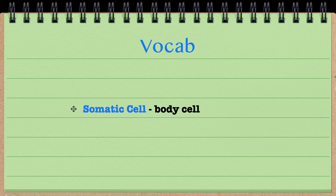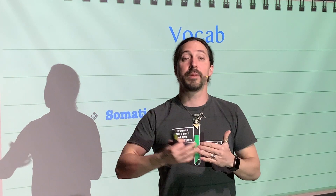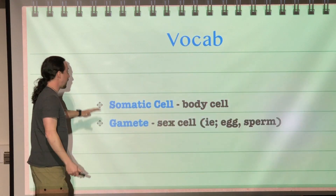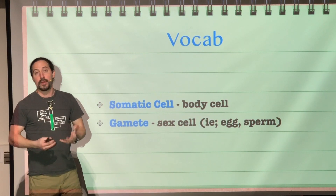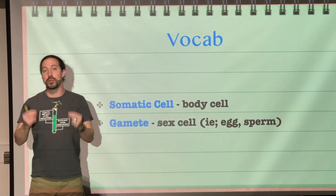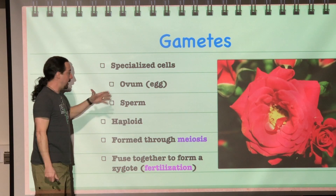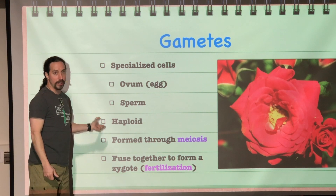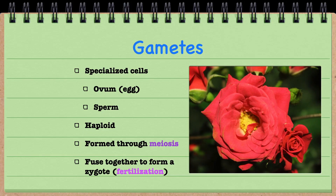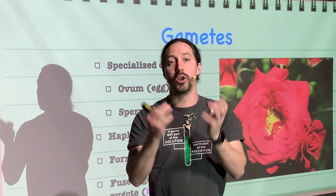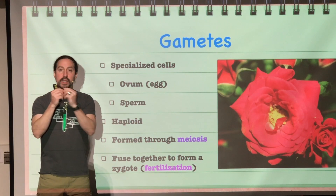For sexual reproduction to work, it can't use a typical body cell, or somatic cell. It requires specialized cells called gametes — that would be the egg and the sperm. They are haploid and are formed through the process of meiosis. They fuse together to form a zygote through the process of fertilization. A zygote is the first cell for the new offspring, formed from the fusing of the egg and the sperm.